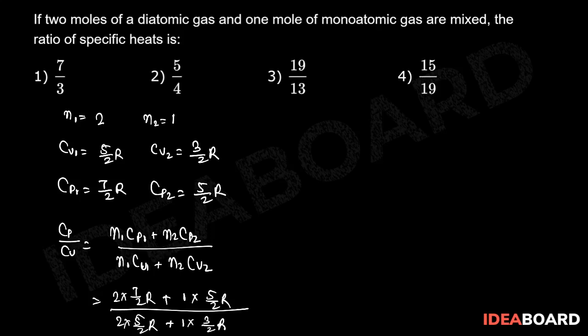So solving it we can write CP by CV which is also equal to gamma is equal to 7 plus 5 by 2 divided by 5 plus 3 by 2. Which is equal to 19 by 2 divided by 13 by 2